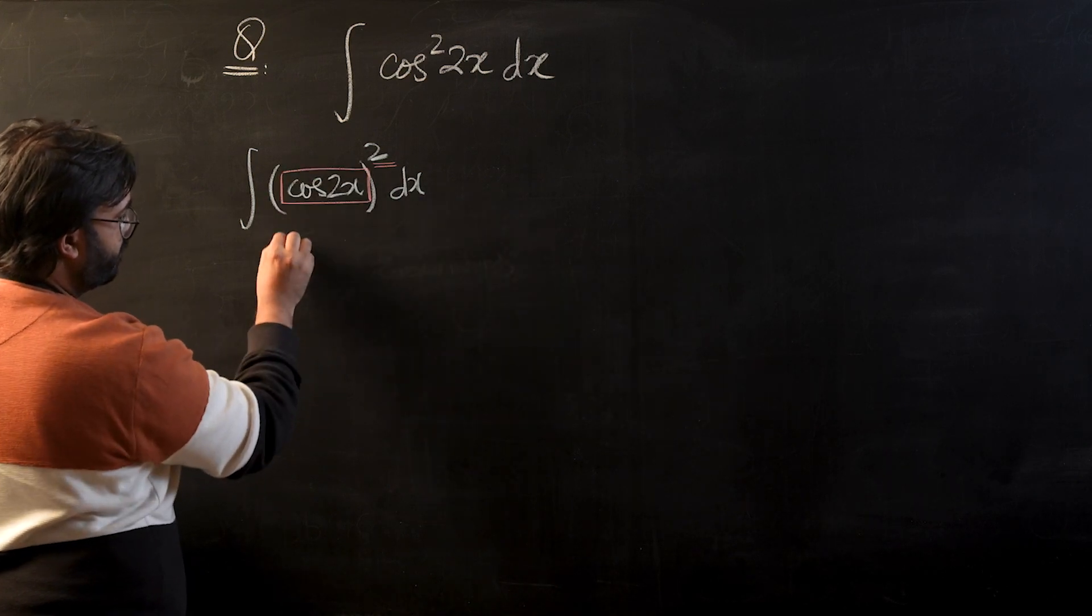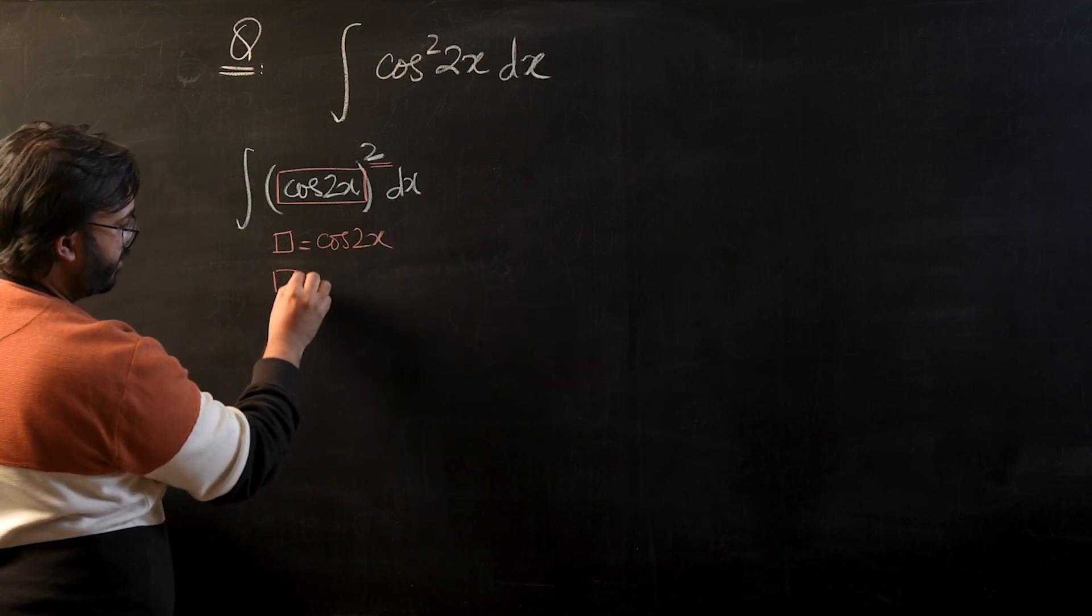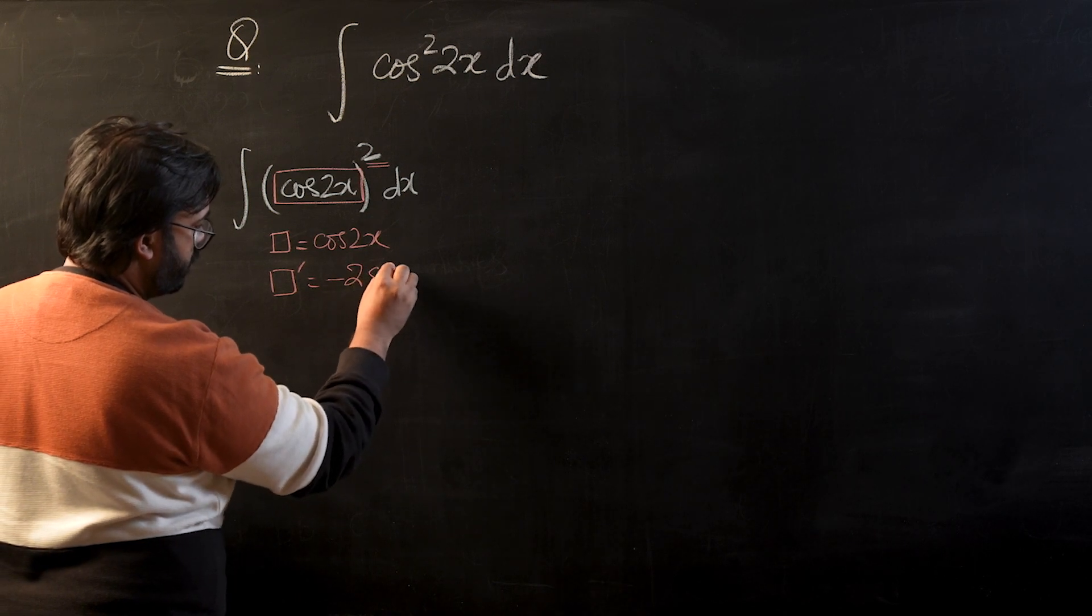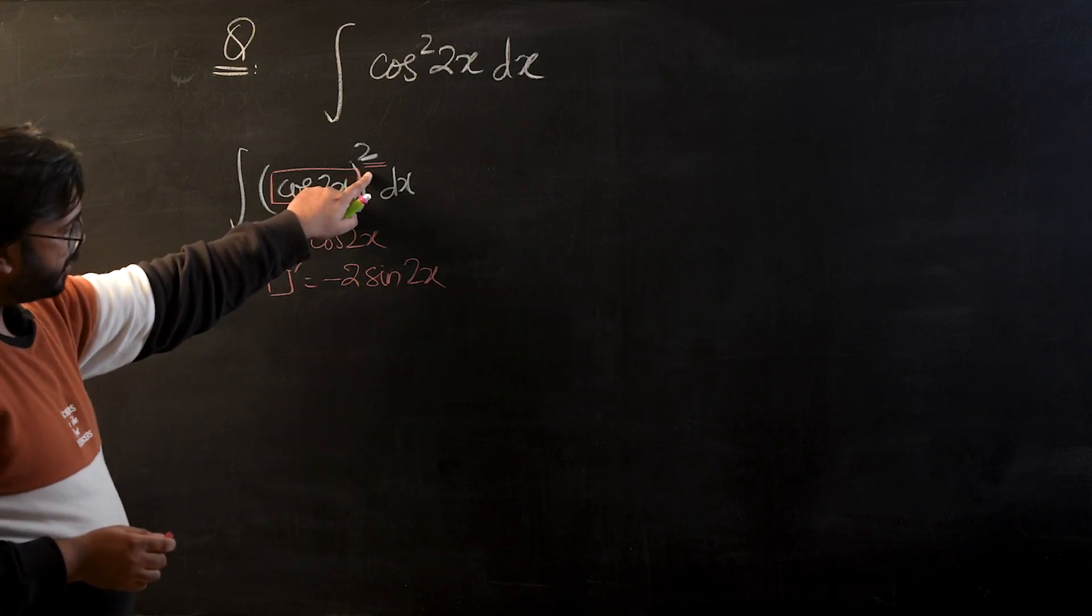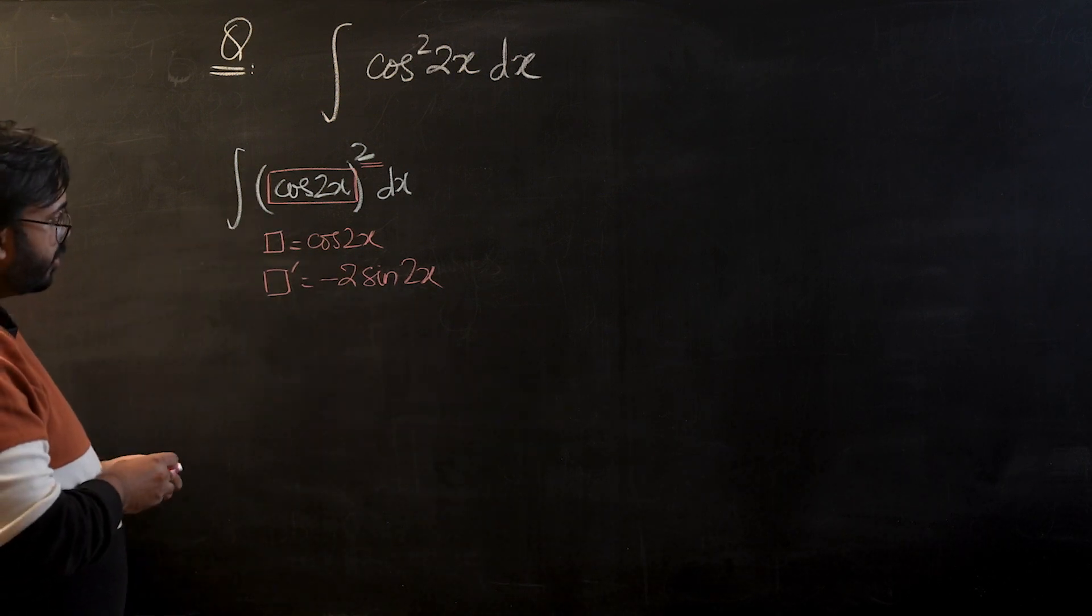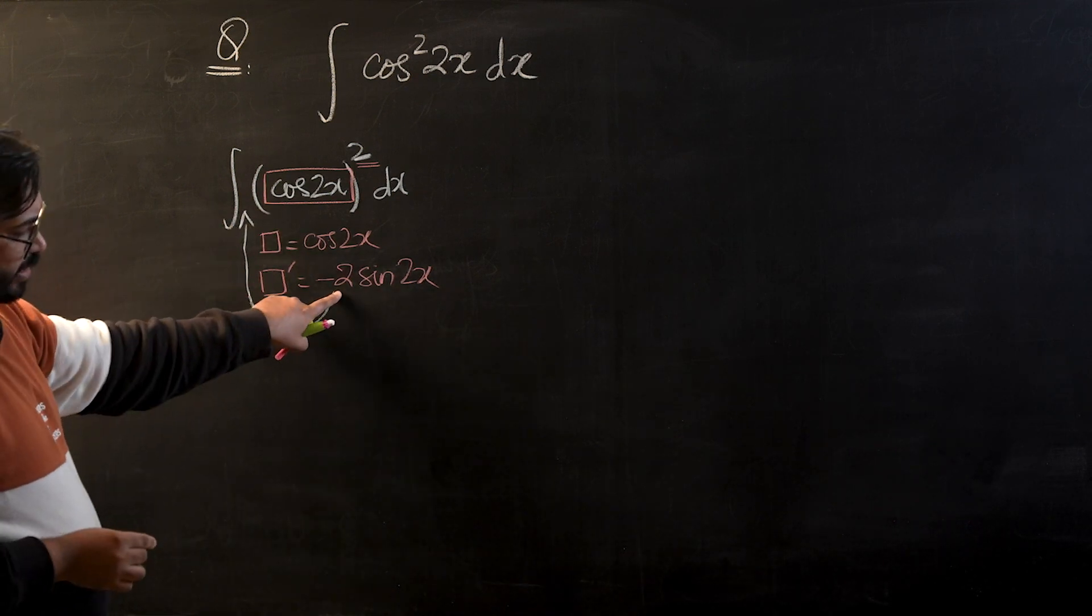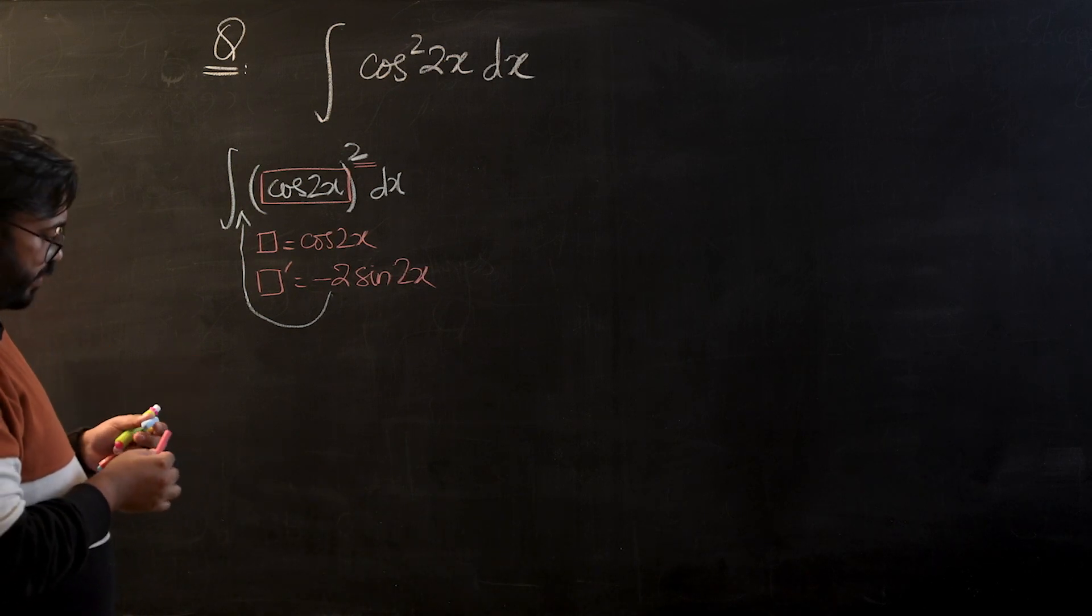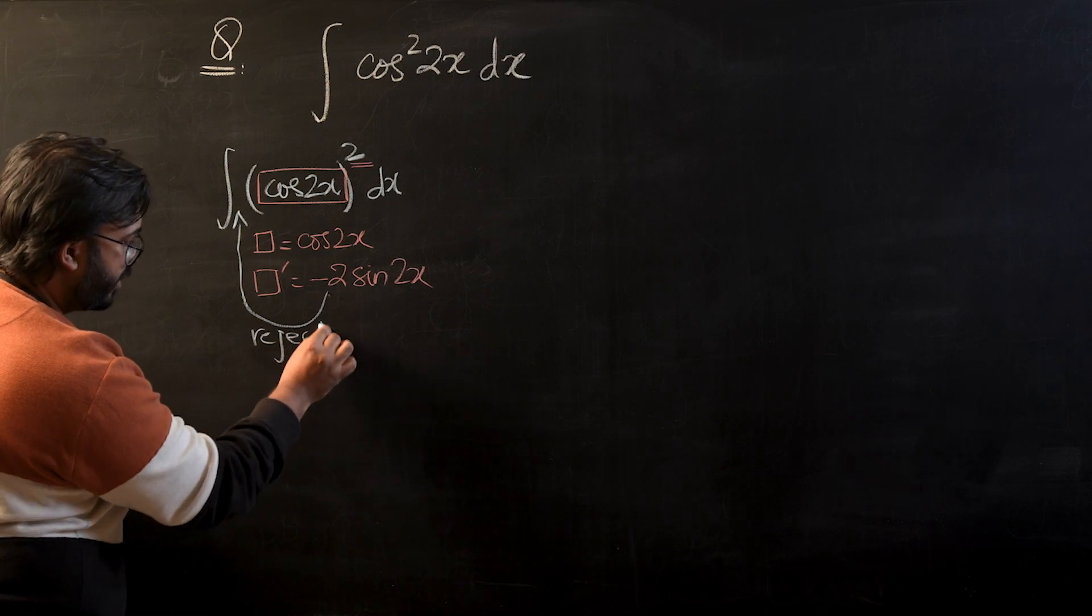If we take power as an operator, then the box will be inner function cos(2x). The differentiation of inner function will become -2sin(2x). We know we are not allowed to integrate this power unless differentiation of box is present outside the operator. We're not allowed to introduce or remove variable terms, so we will be able to introduce -2, but we will not be able to introduce sin(2x). So what should we do? This operator will be rejected.